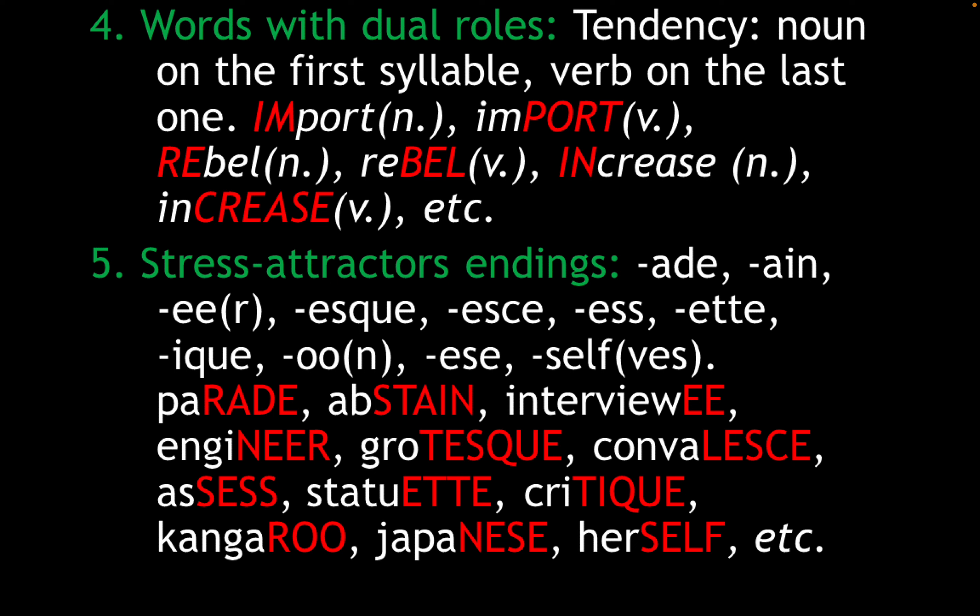There are some suffixes that attract stress — not rules, but tendencies. Suffixes such as '-ade,' '-ain,' '-ee,' '-eer,' '-esque,' '-ence,' '-ess,' '-ette,' '-ique,' '-oo,' '-ese,' '-self,' and so on attract stress to themselves. Examples: 'parade,' 'abstain,' 'interviewee,' 'engineer,' 'grotesque,' 'covalence,' 'assess,' 'statuette,' 'critique,' 'kangaroo,' 'Japanese,' 'herself,' etc.